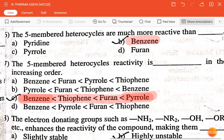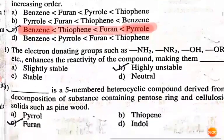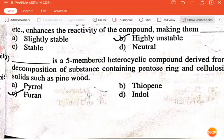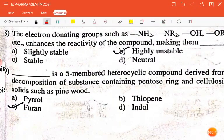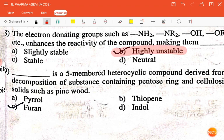The next question is: the electron-donating groups like NH2, NR2, OH, OR, etc. enhance the reactivity of the compound, making them — slightly stable, highly unstable, stable, or neutral? The correct answer is highly unstable.